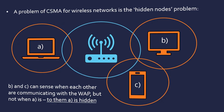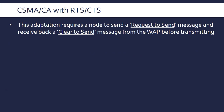A way to counteract the hidden nodes problem is to add another aspect onto the protocol: RTS/CTS — Request to Send, Clear to Send. Once the node has determined that the channel is clear, it will double-check by sending a Request to Send message to the wireless access point. If the channel is clear, it will get a Clear to Send message back, and then it will transmit.